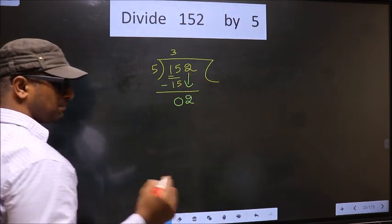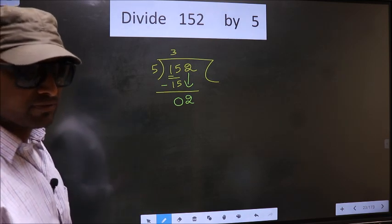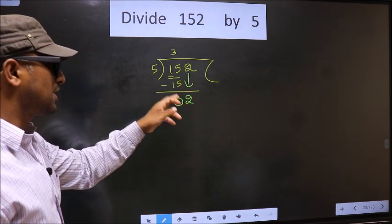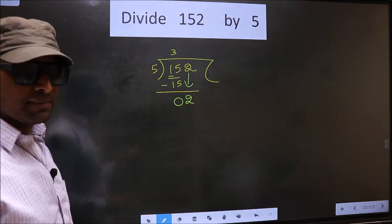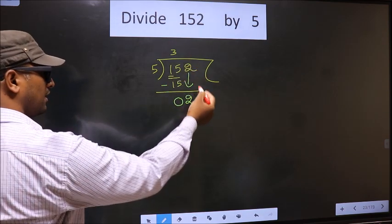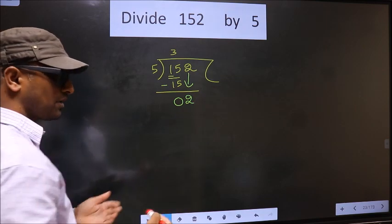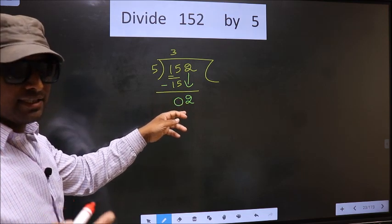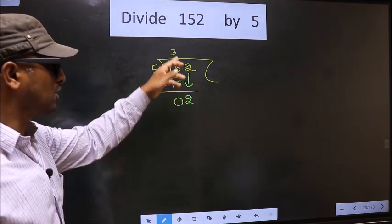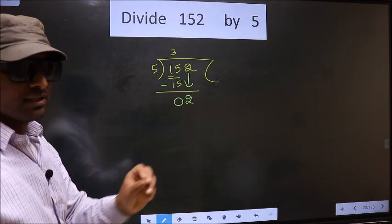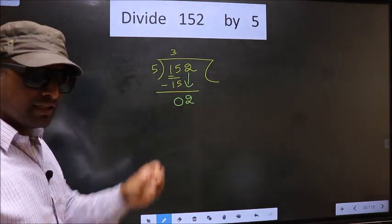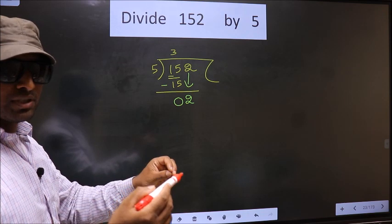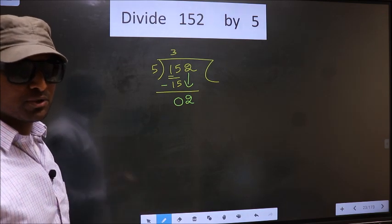This is where the mistake happens. Here we have 2, and here 5. Since 2 is smaller than 5, what many do is put a decimal point and write 0 here. This is wrong. You just brought the number down, and in the same step, you want to put a dot and take 0 here, which is wrong. I repeat: bringing the number down and putting a dot and taking 0, both at the same step, you are not supposed to do.